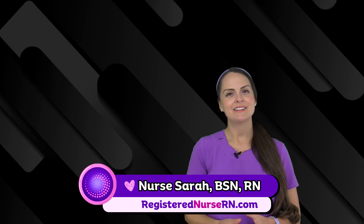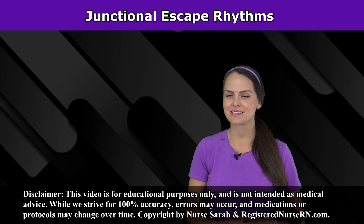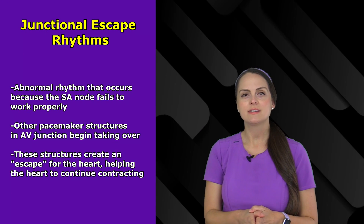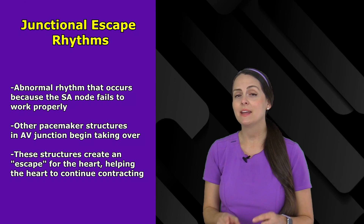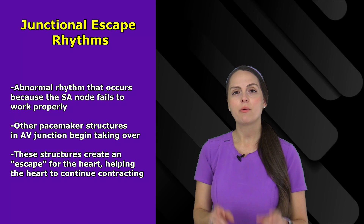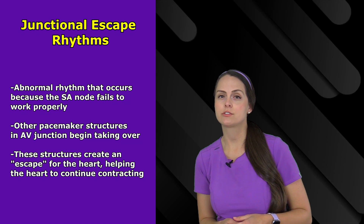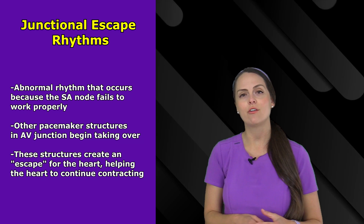Hey everyone, it's Nurse Sarah and in this video I'm going to be talking about junctional escape rhythm. This is an abnormal rhythm that arises because the main pacemaker of the heart, known as the sinoatrial node, fails to work. It's either working way too slow or it's not working at all. So other pacemaker structures found in the AV junction of the heart start to take over.